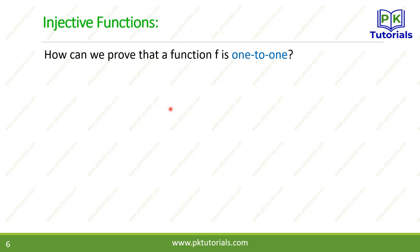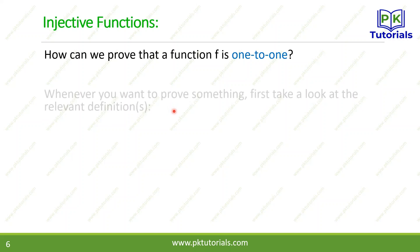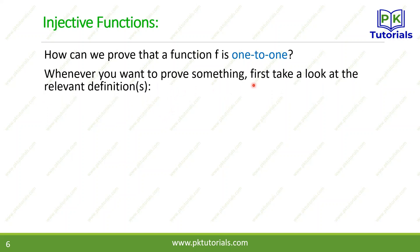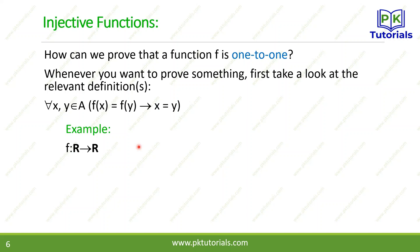How can we prove that a function is one-to-one analytically? Whenever you want to prove something, first look at the relevant definition: for all x and y belonging to A, f(x) = f(y) implies x = y. For example, consider f: ℝ → ℝ defined by f(x) = x². We need to determine whether this is one-to-one.